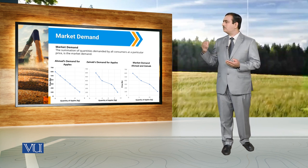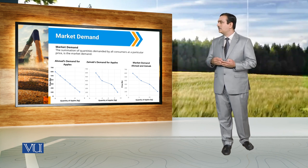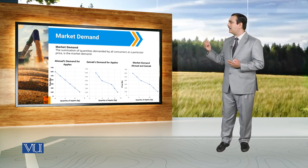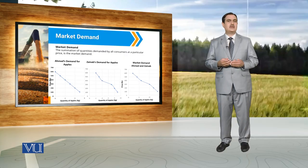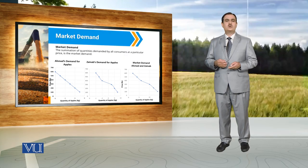For example, in this particular case, if price is equal to 600 rupees, then demand in the market is equal to 2 kg of apples by all the individuals in that particular market. And if there is a decrease in price of apples, we can see there is an increase in demand by both Ahmad and Zainab. And if price becomes 100, then total demand in the market is equal to 14 kg of apples. So by aggregating demand by Zainab and Ahmad, we can report market demand.